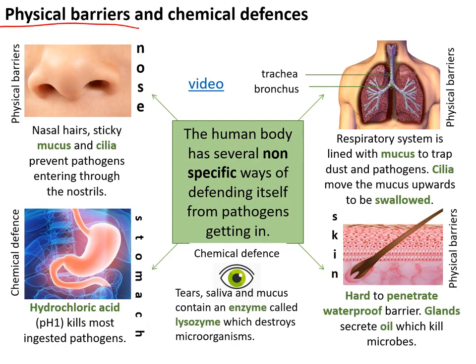Physical barriers block pathogens: mucus in the nose and lungs traps bacteria, and cilia sweep that mucus back out of the body. Chemical defences include lysozyme — an enzyme in saliva, tears, mucus, and sweat — which kills bacteria, and hydrochloric acid in the stomach which kills most pathogens on our food.